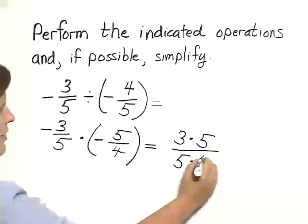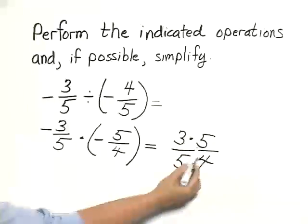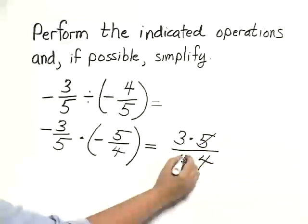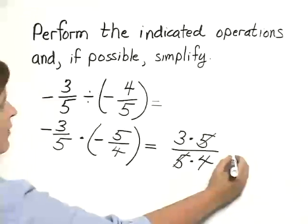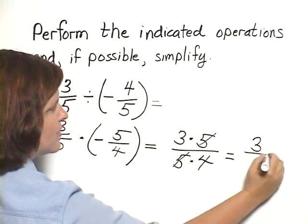Now notice I did not multiply these out because I have a common factor of five. Five over five is one, so I can cancel, remove a factor equal to one, and this equals three-fourths.